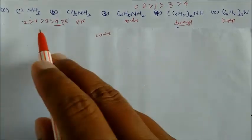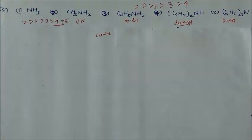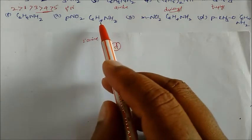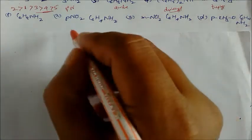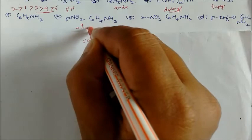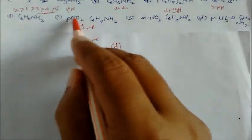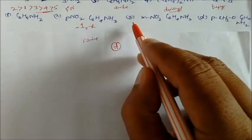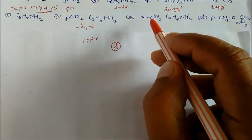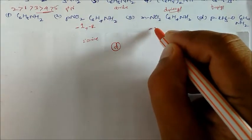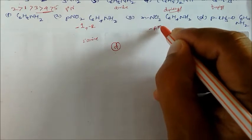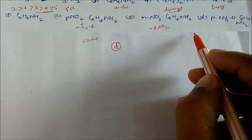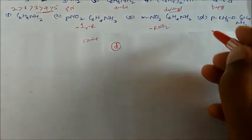Now comparing aniline with p-nitroaniline: in p-nitroaniline, the nitro group exerts both a –I (inductive) and –R (resonance) effect, making the lone pair on nitrogen even less available. At the meta position, only the –R effect of the nitro group is present.